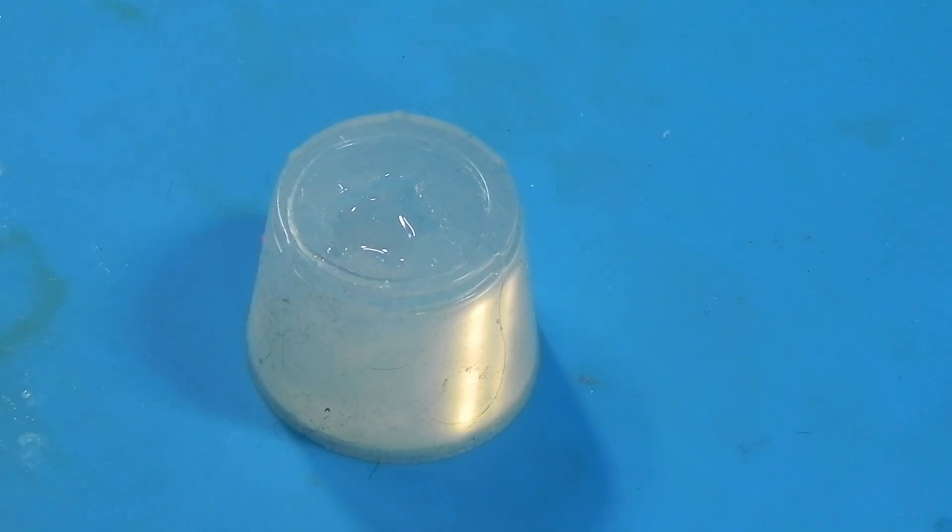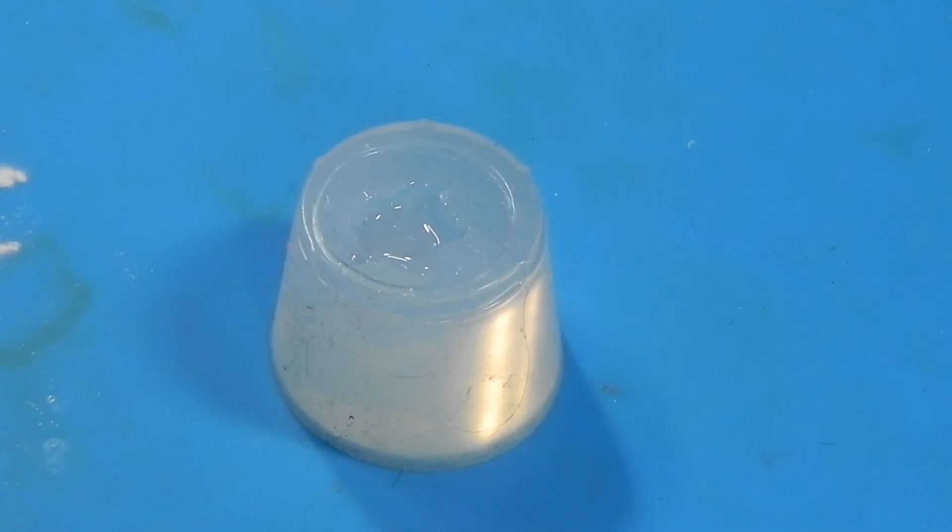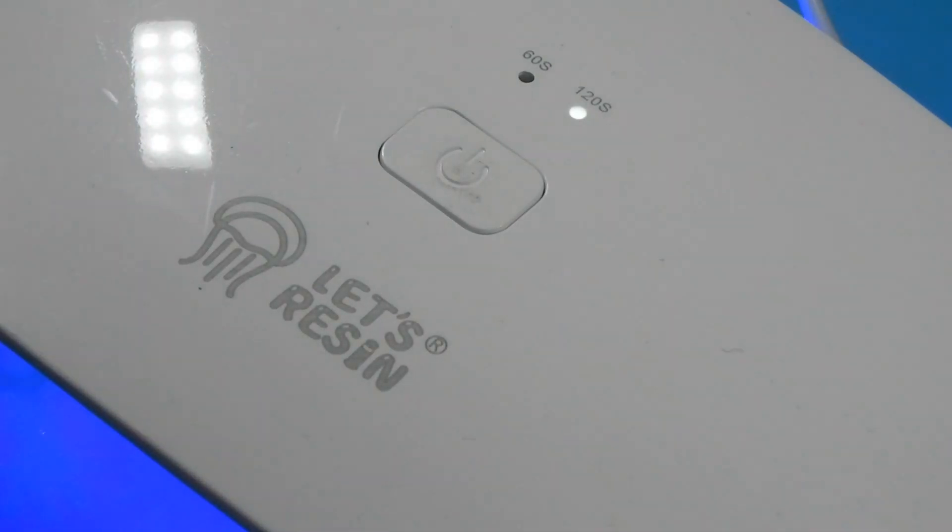Then I'm going to give it just a little bit of time to make sure all the bubbles rise to the top. Once I'm sure that I've got all the bubbles, underneath the lamp it goes for the full 120 seconds. I'm not going to leave it on there the whole time. We'll just skip to the next section.